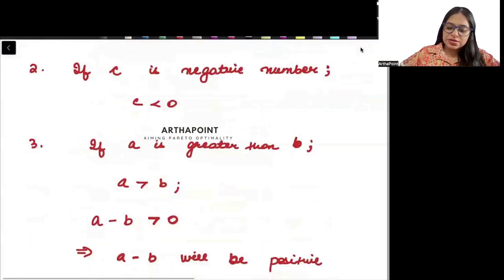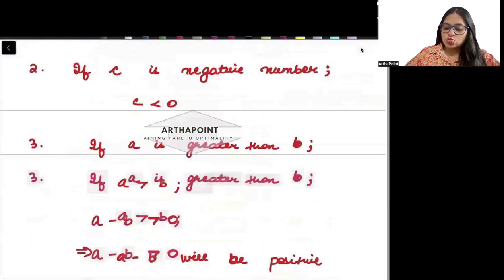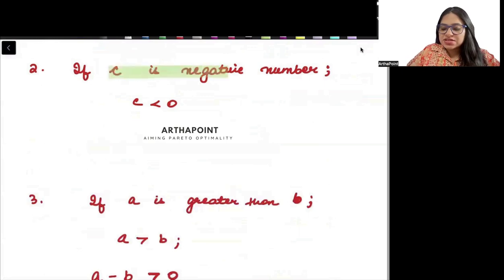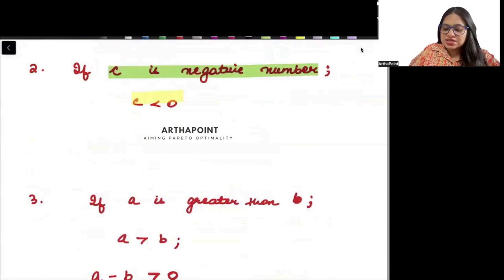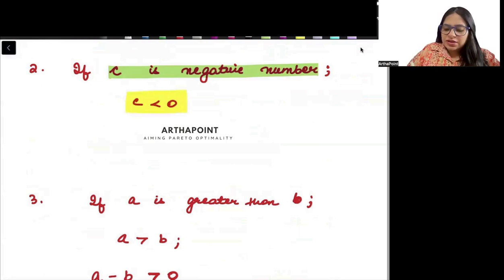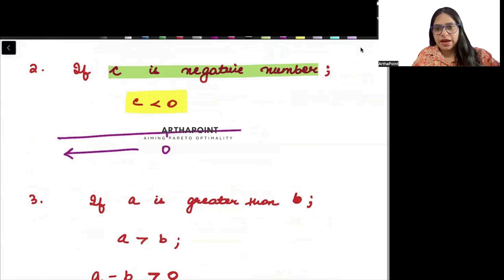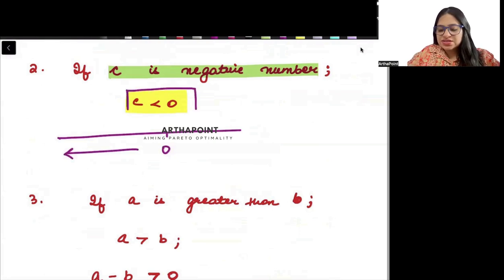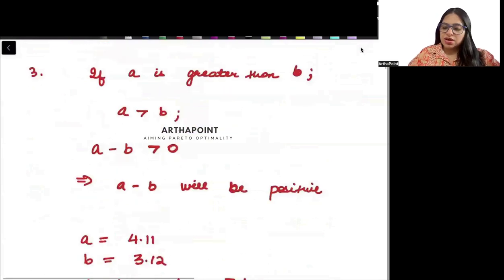The next rule: if c is a negative number, then c is written as c less than 0. If anything is negative, then it is less than 0.